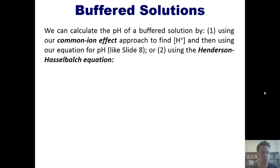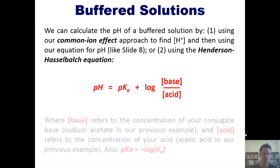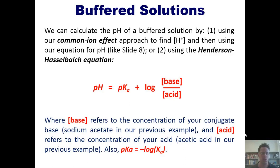Now we can calculate the pH of a buffered solution by first using our common ion effect approach to find the H+ concentration and then using our equation for pH, or by second using the Henderson-Hasselbalch equation. That equation is this one right here, where the base concentration refers to the concentration of your conjugate base, or sodium acetate in this example, and the concentration of acid refers to the concentration of your acid, which is acetic acid in this previous example.